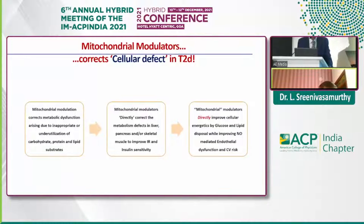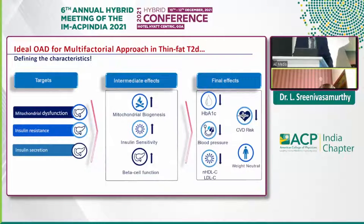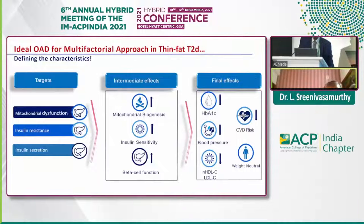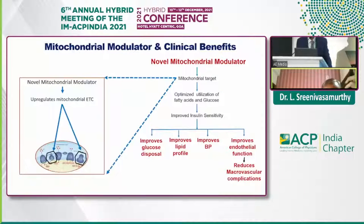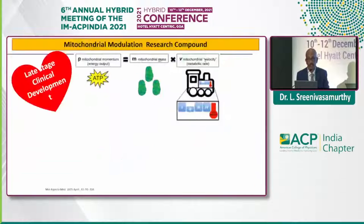Mitochondrial modulators directly improve cellular energetics through glucose and lipid disposal while improving nitric oxide-mediated endothelial dysfunction. The ideal oral antidiabetic drug with a mitochondrial modulator effect would correct mitochondrial dysfunction, insulin resistance, and insulin secretion, eventually resulting in reduction of HbA1C and cardiovascular risk as a whole.